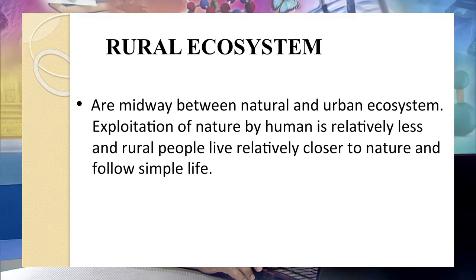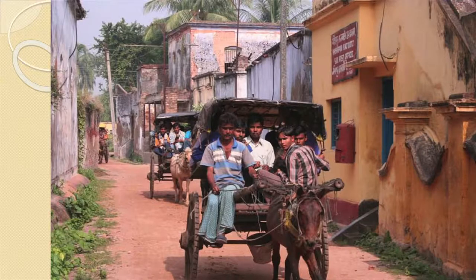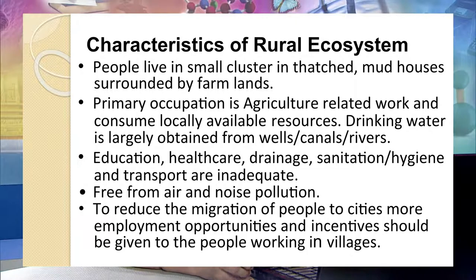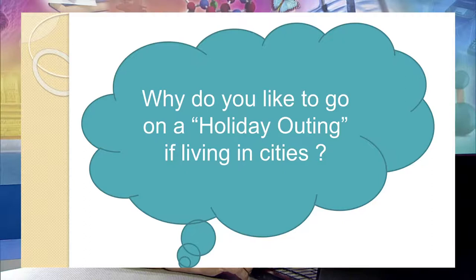Urban areas consume 75% of earth's resources and generate 75% of waste. Next is rural ecosystem. Rural ecosystems are the midway between natural and urban ecosystems. Exploitation of nature by humans is relatively less, and rural people live relatively closer to nature and follow a simple life. People live in small clusters in thatched and mud houses; primary occupation is agriculture. Education, healthcare, drainage, and transport are inadequate — one reason people tend to move to urban settlements. However, rural areas are free from air and noise pollution.